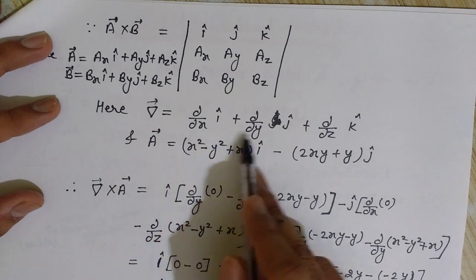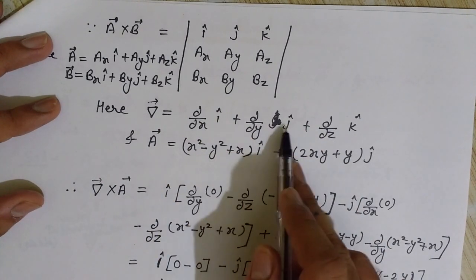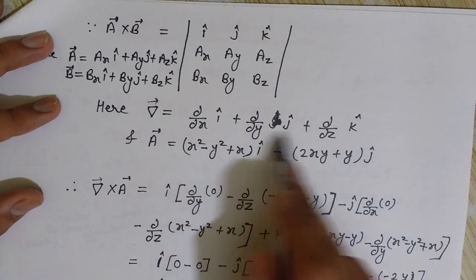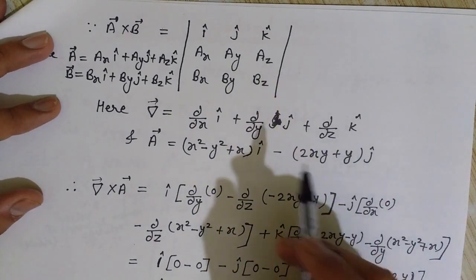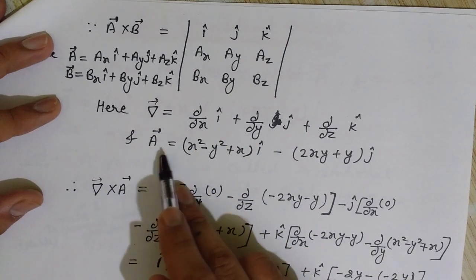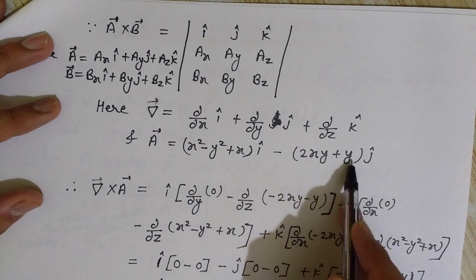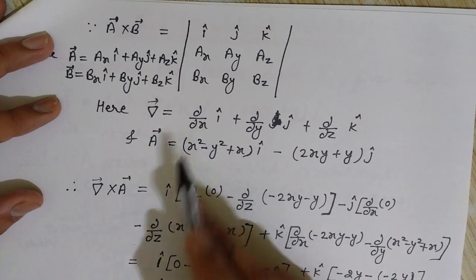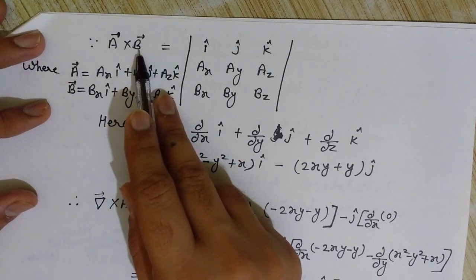Here ∂/∂x, ∂/∂y, and ∂/∂z are the partial derivatives with respect to x, y, and z in the î, ĵ, and k̂ directions. These unit vectors lie along the three perpendicular x, y, and z axes. Our given vector A is: (x² − y² + x) î + (−2xy + y) ĵ.